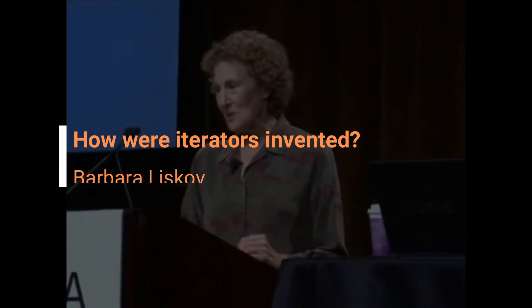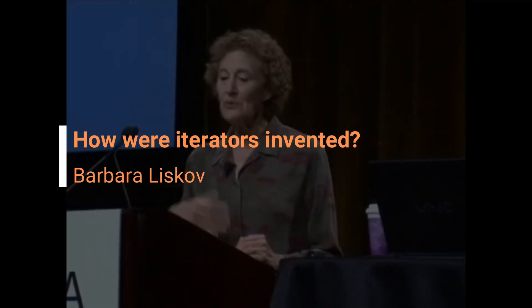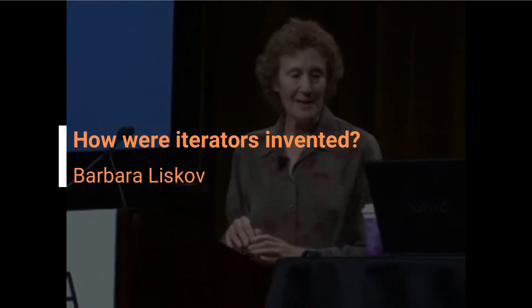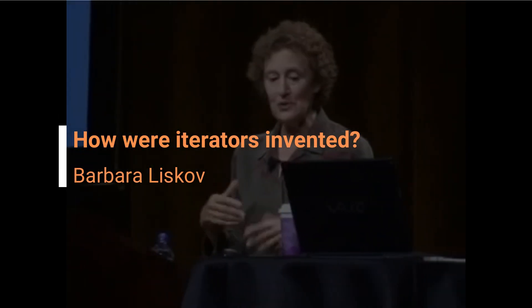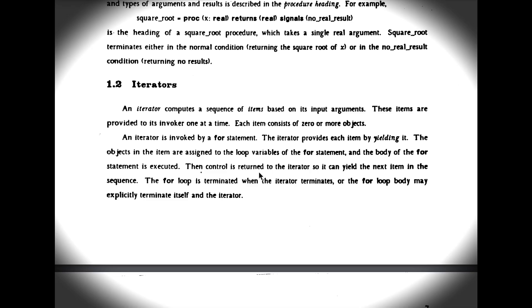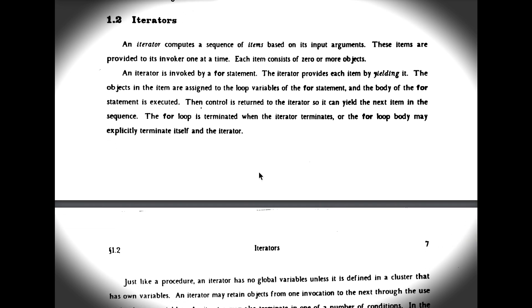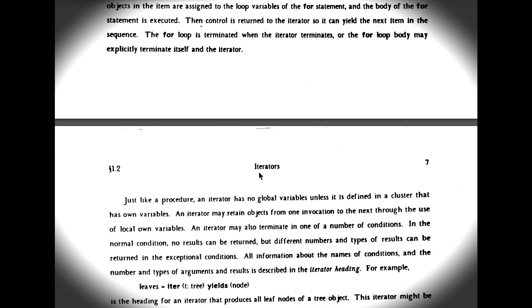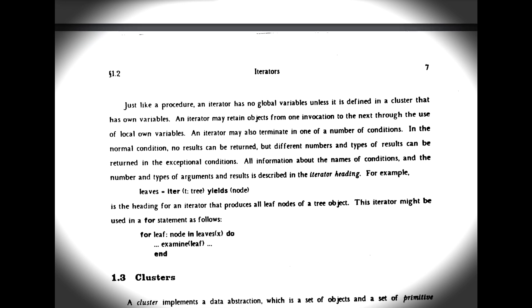The final thing I want to tell you about is iterators. We were very worried when we were doing the design of CLU about what to do with this kind of structure. What's the point of having a collection object? You gather together all the elements, and then you want to do something with them. And typically, that takes the form of a for loop.